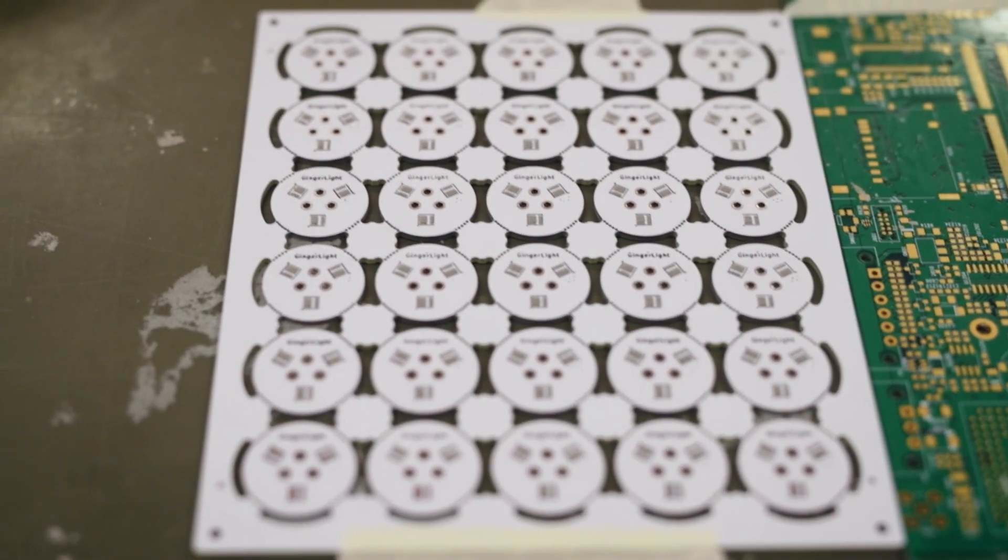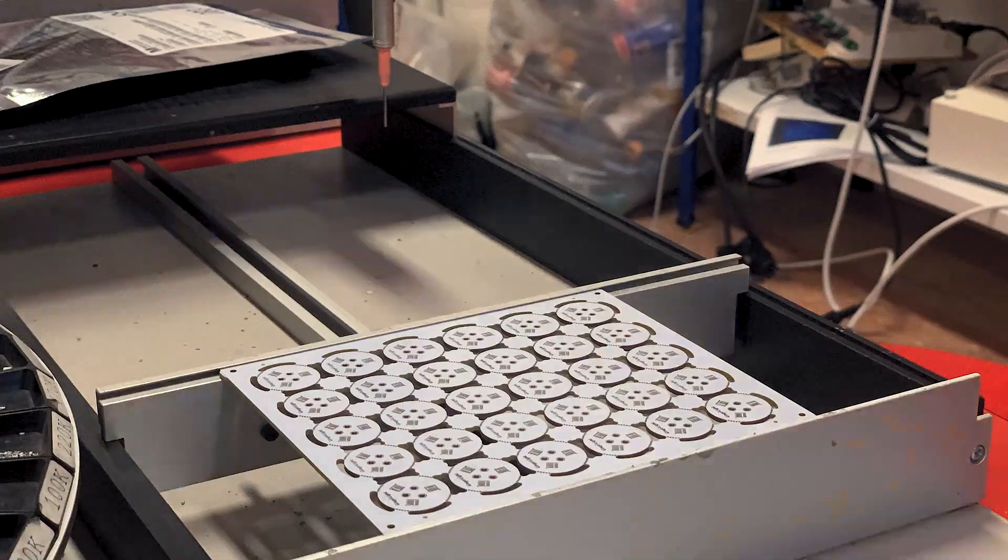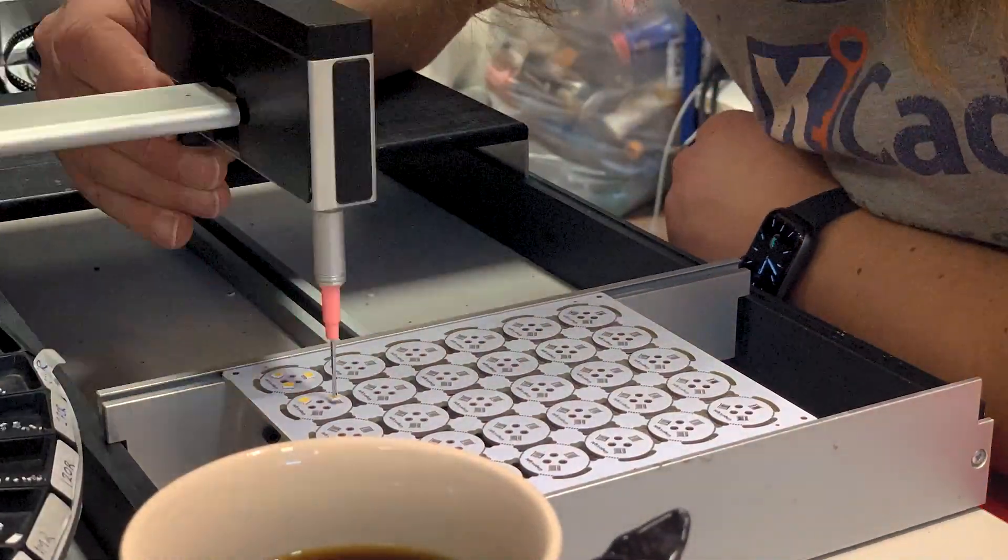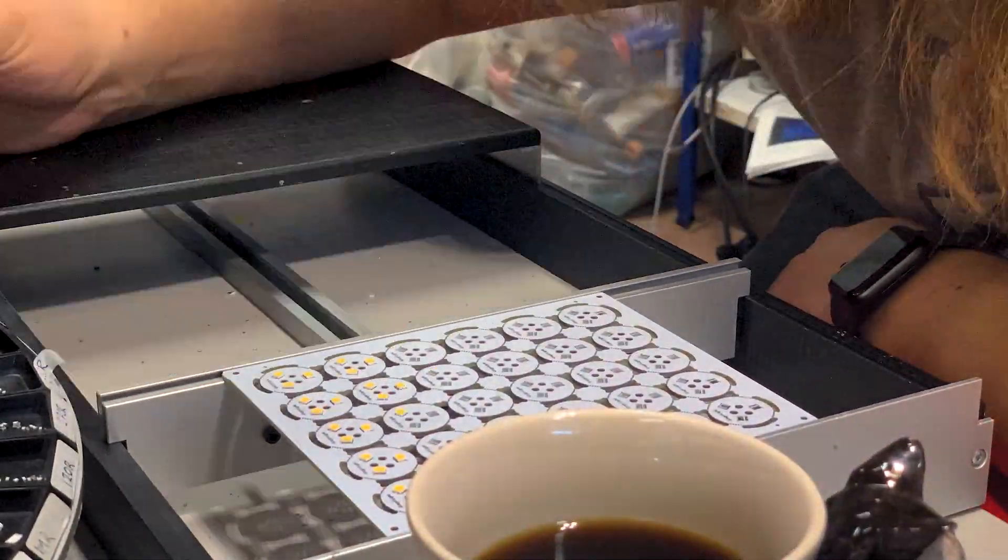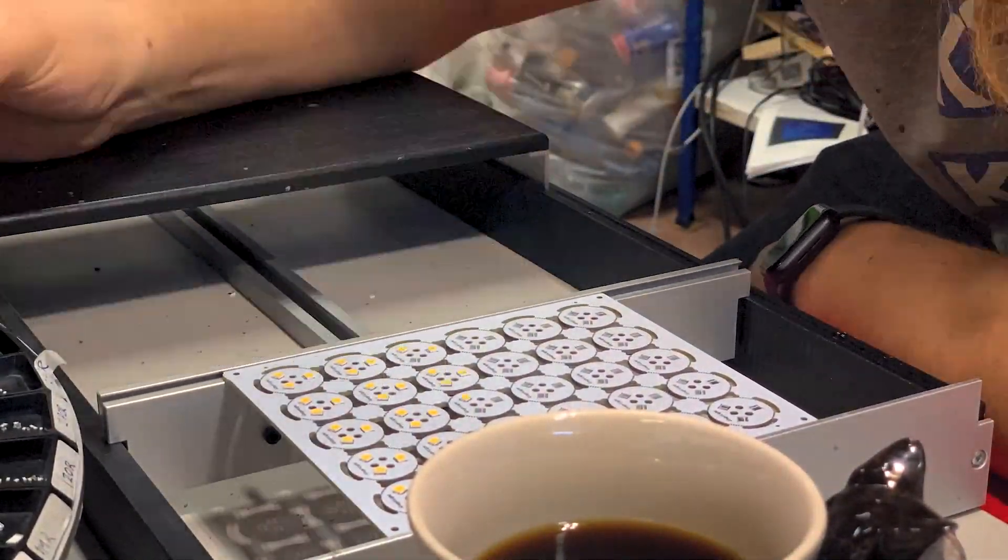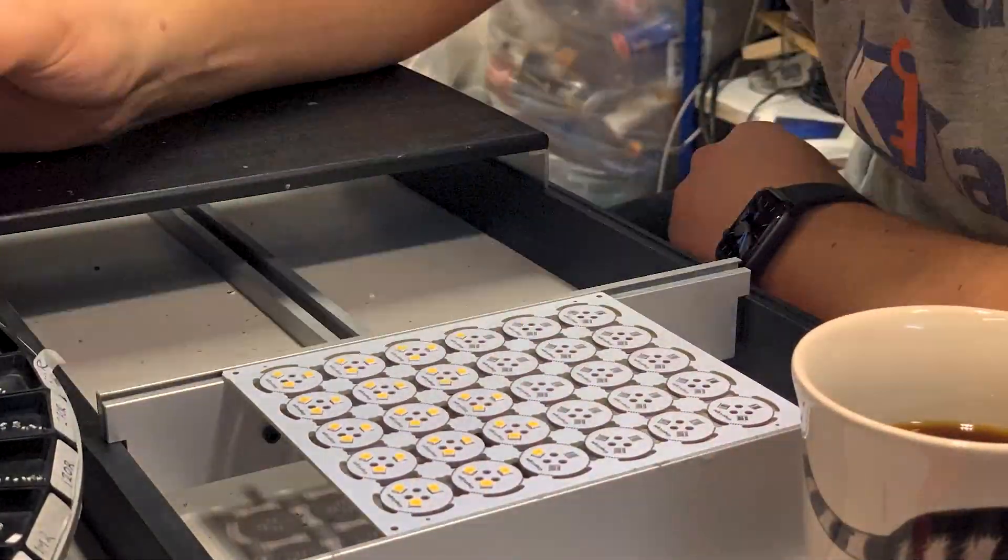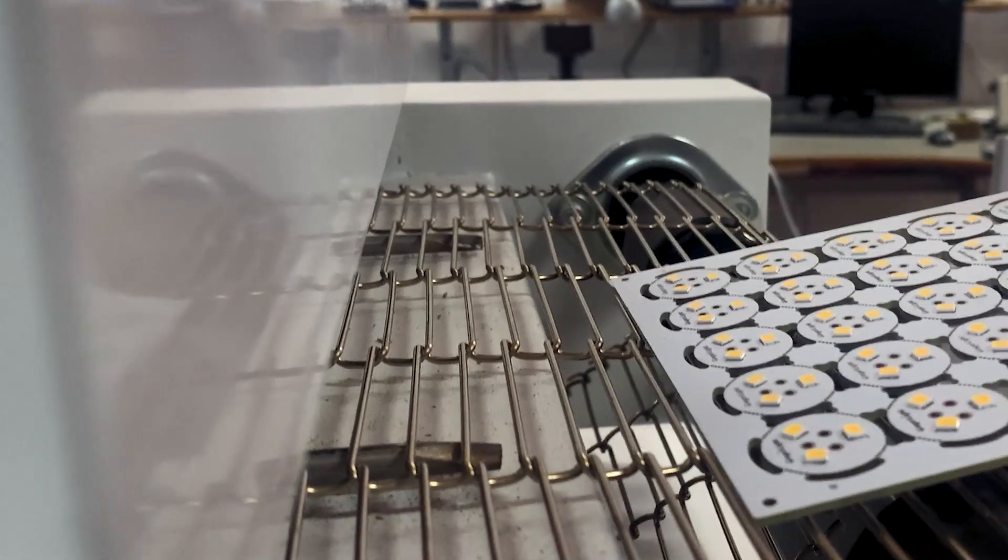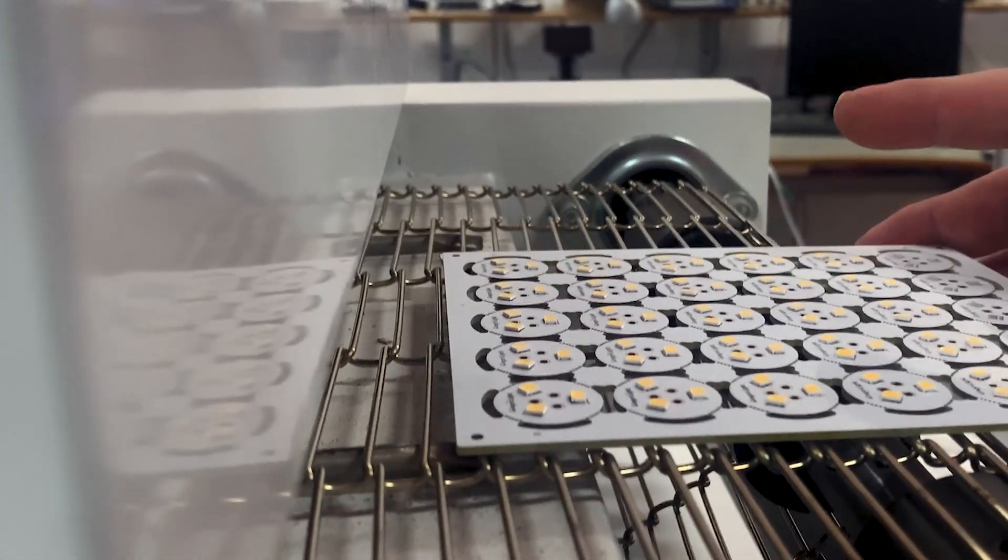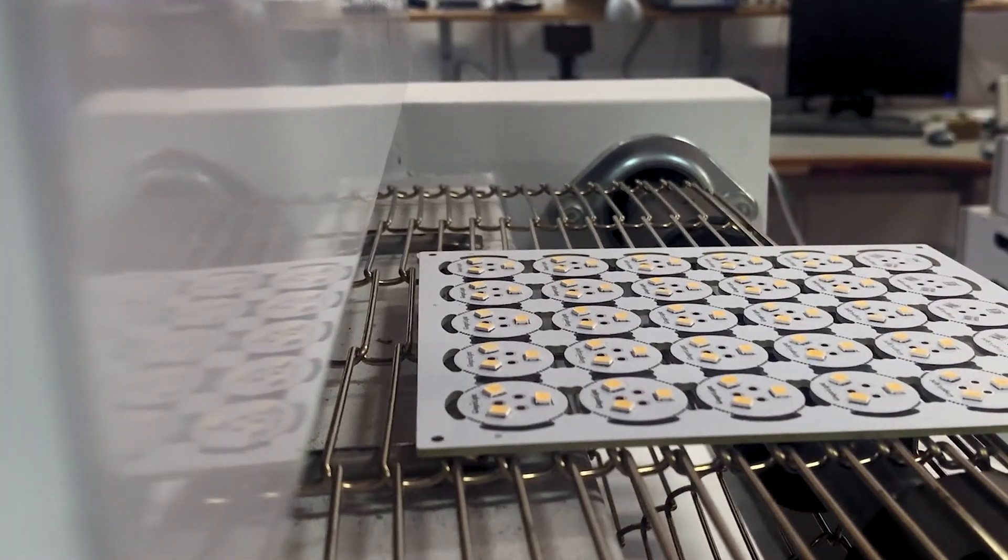Here you can see the PCB with solder paste applied. And now it's time to get all the LEDs placed on the board. The PCB is then placed into the hot air oven to be reflown. This takes a few minutes.